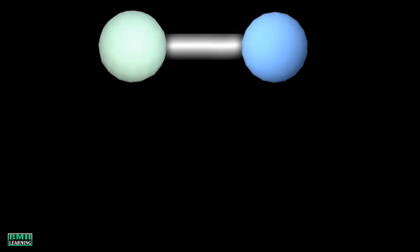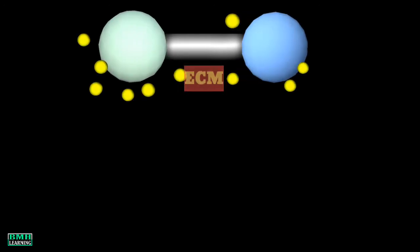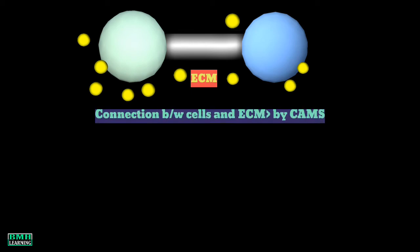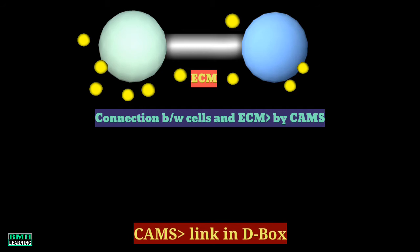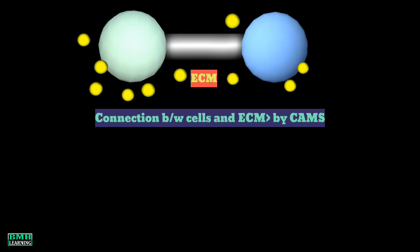Hello friends, welcome to BMH Learning. In this tutorial we will talk about cell junctions. In simple terms, a cell junction is a bridge that connects two cells or attaches a cell to its extracellular matrix. But making connections between cells and the extracellular matrix is also a property of cell adhesion molecules, so where is the difference? To make it clear, let's know a bit more about cell junctions.